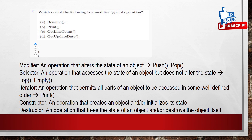Coming to the selector — an operation that accesses the state of the object but does not alter it. For example, the top operation on a stack tells the condition of the stack without modifying it. The iterator accesses all parts of the object; an example is print. The constructor creates an object and initializes its state. The destructor frees the state of an object or destroys the object itself. These are the five types of operations.